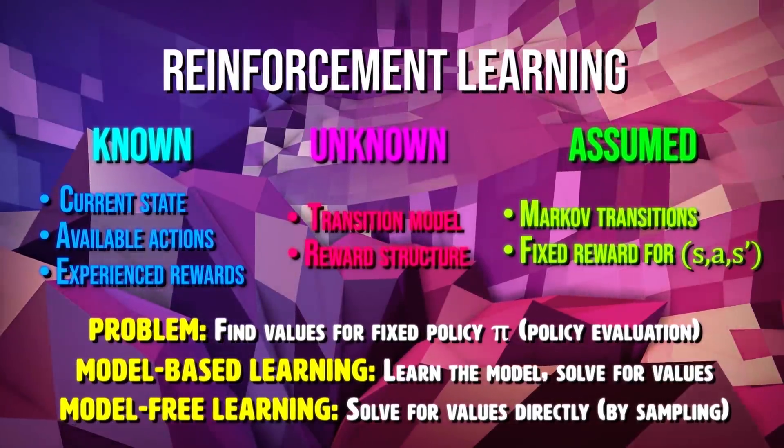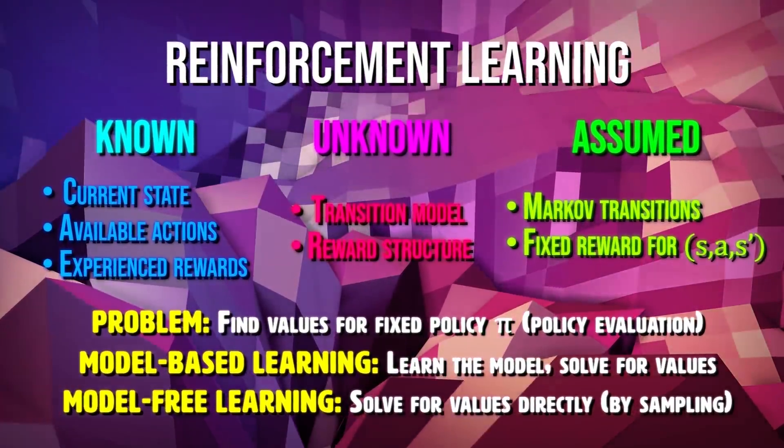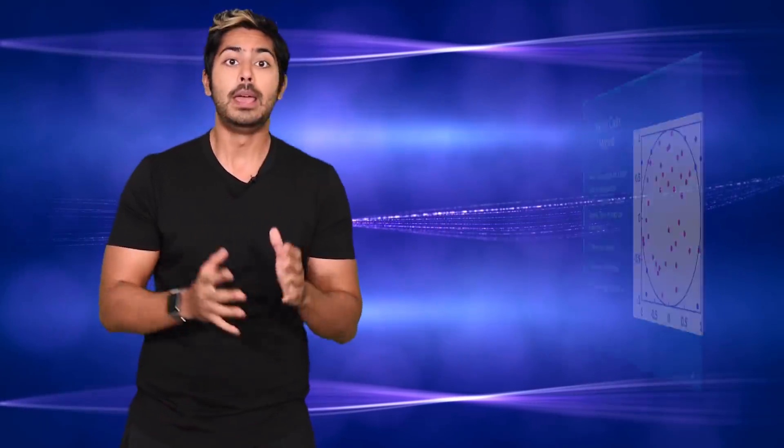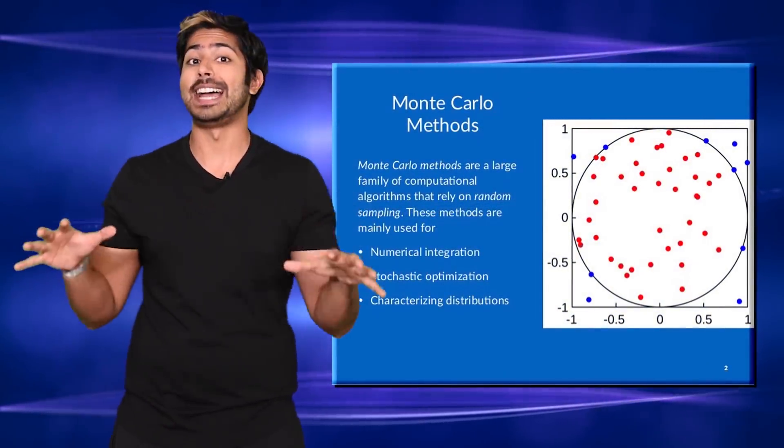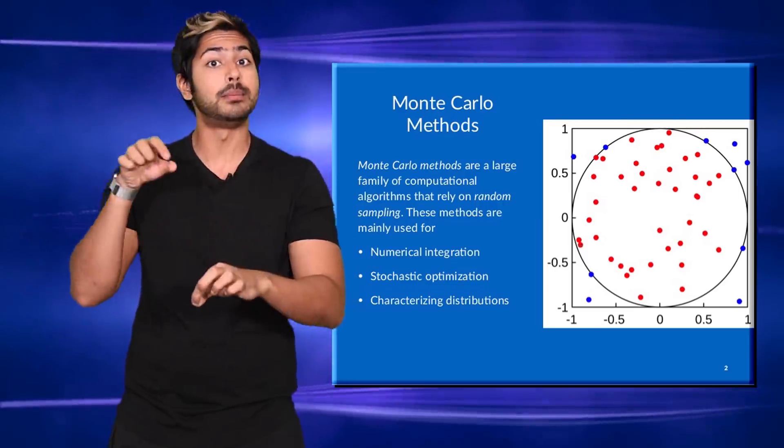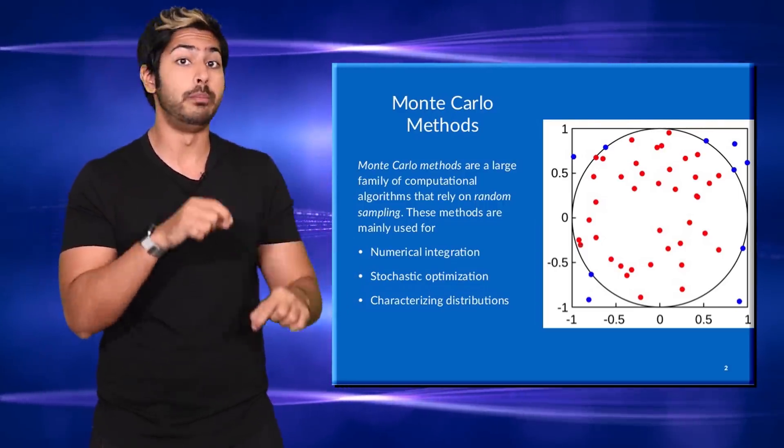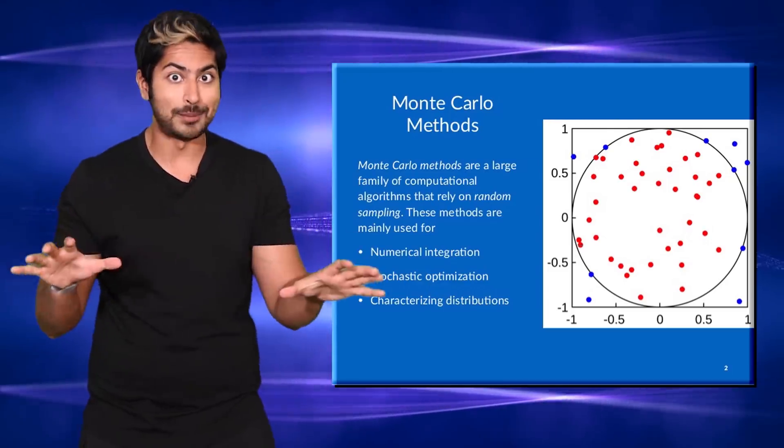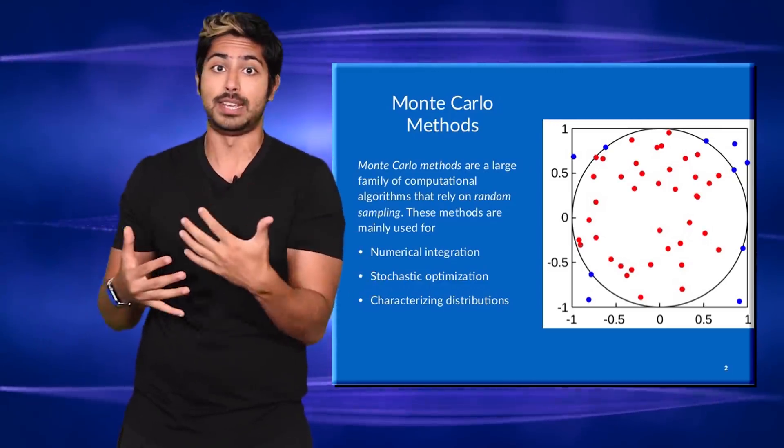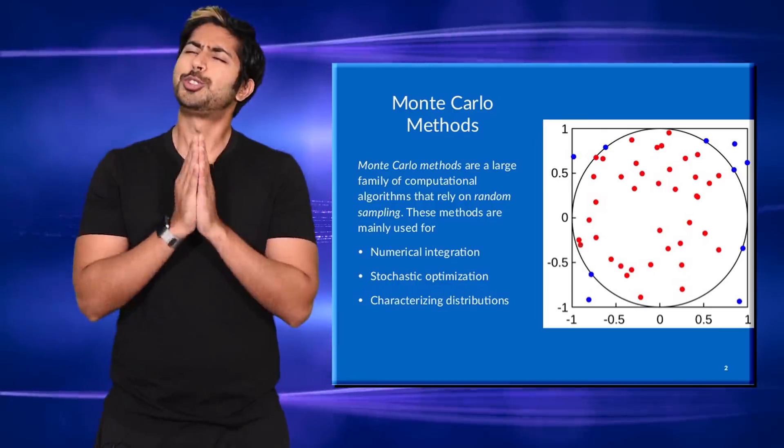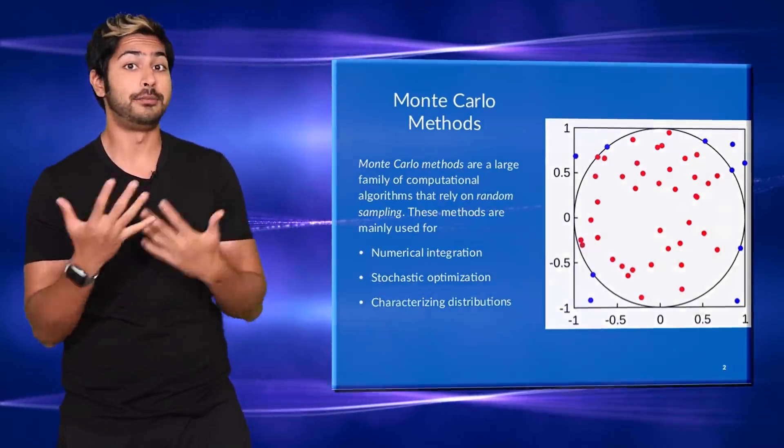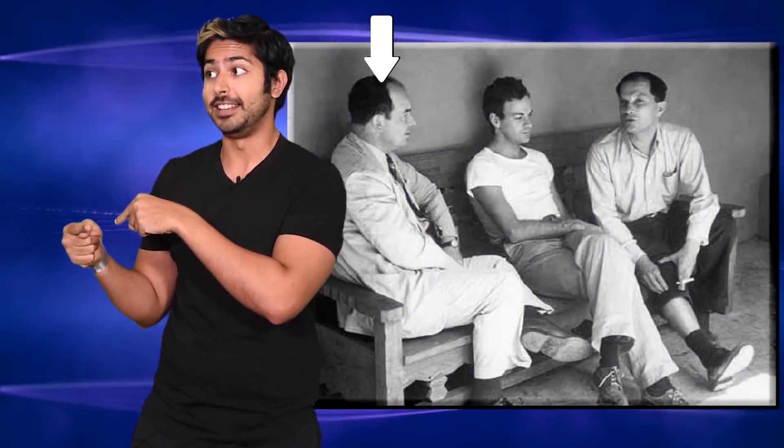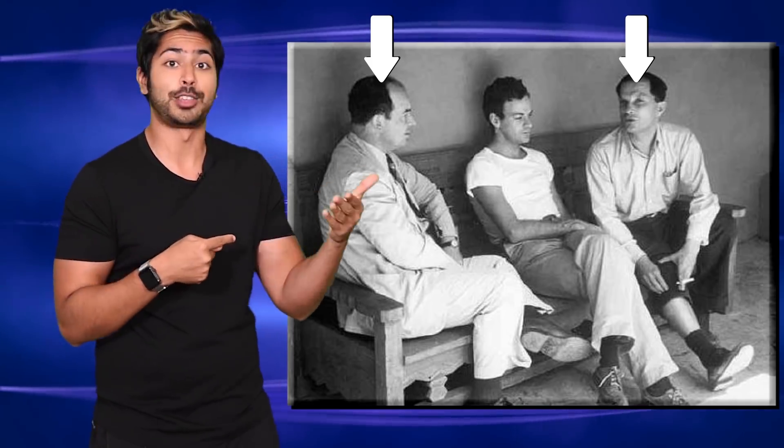So when we don't know either of these Markovian variables, dynamic programming won't work. We need to instead use a different type of method called Monte Carlo. Monte Carlo methods are a broad class of algorithms that rely on repeated random sampling to obtain numerical results. The keyword here is random. Monte Carlo methods make use of randomness to solve problems, which turns out to be very useful in mathematics and physics.